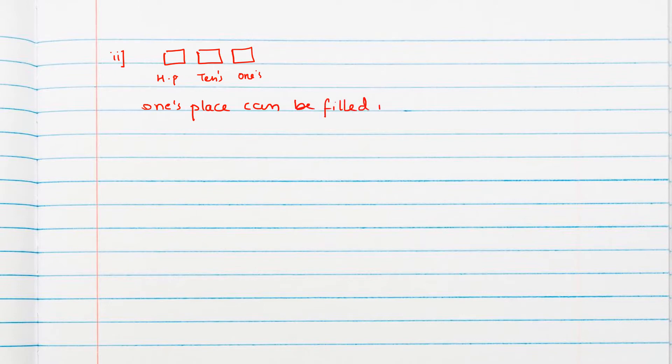For the second part, repetition of the digit is not allowed. Again, we have a three-digit number with ones place, tens place, and hundreds place. The units place can be filled in five ways. But after filling the units place, we cannot use that same number at the tens place, so for the tens place we have only four choices.